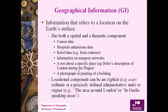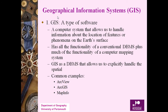For example, a photograph or a painting of a building — the location component can be explicit, such as a coordinate or a precisely defined administrative unit. This is where the spatial component comes in, or it can be vague, like 'the area around London' or 'Gaelic speaking areas.' Then comes GIS — geographic information system.